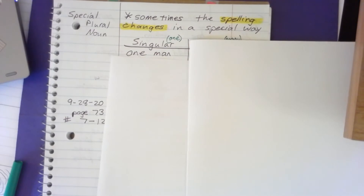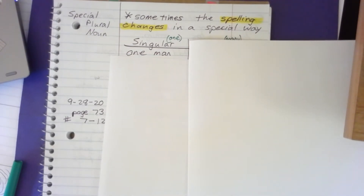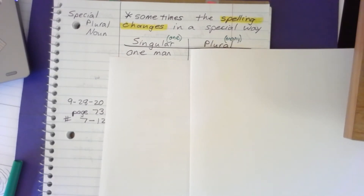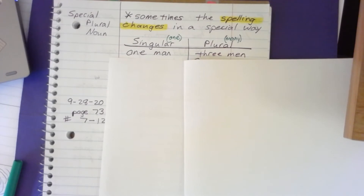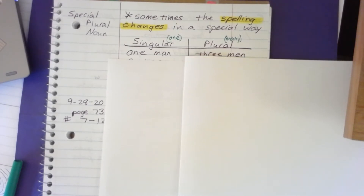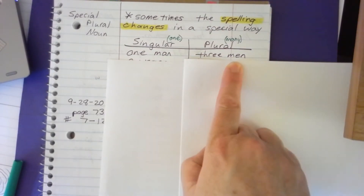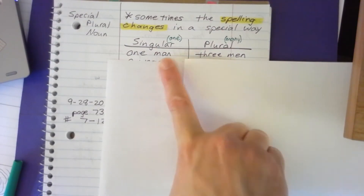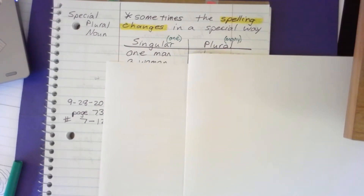Let's take our first example. If we have one man, how do we say many? 'Many man' doesn't sound right. Three men — the spelling changes to M-E-N. Man becomes men.